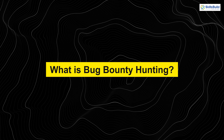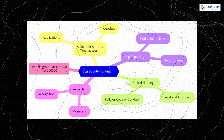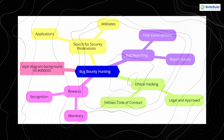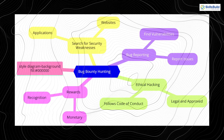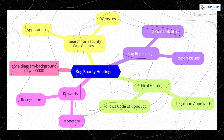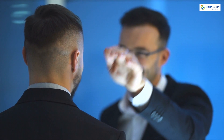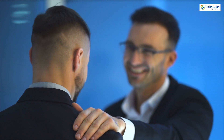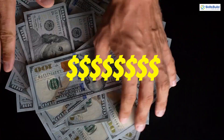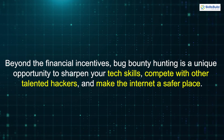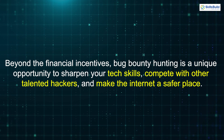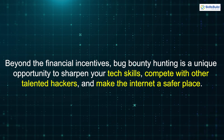So what exactly is bug bounty hunting? In simple terms, bug bounty hunting is a form of ethical hacking where you search for security weaknesses, or bugs, in websites and apps. When you find one, you report it to the developers or owners in exchange for a reward. Depending on the severity of the bug, you could earn hundreds, thousands, or even millions of dollars. Beyond the financial incentives, bug bounty hunting is a unique opportunity to sharpen your tech skills, compete with other talented hackers, and make the internet a safer place.